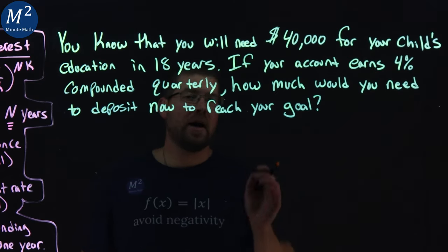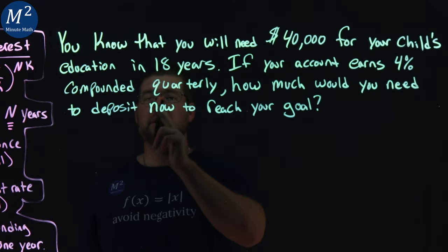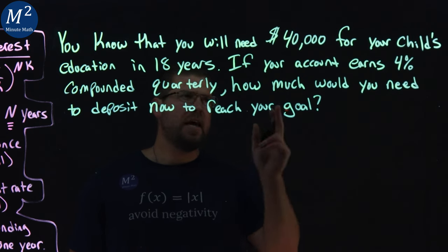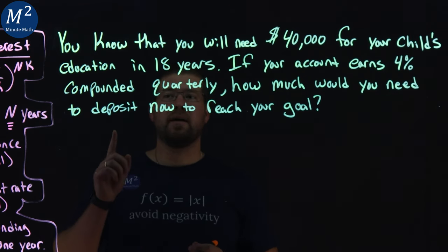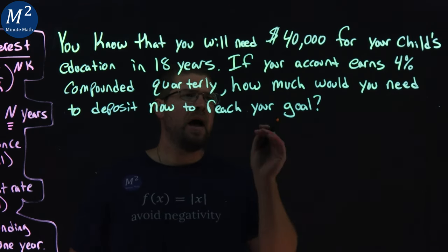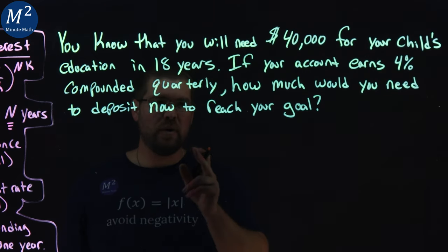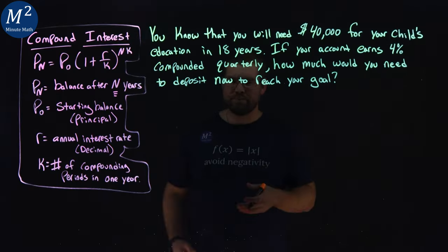You know that you will need $40,000 for your child's education in 18 years. If your account earns 4% compounded quarterly, how much would you need to deposit now to reach your goal? Let's learn.